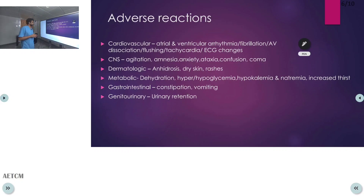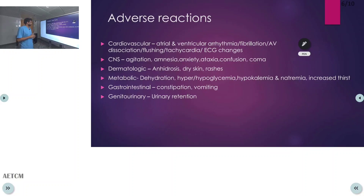In the CNS, agitation, psychosis, confusion, and coma can be seen. In dermatology, as atropine is anticholinergic, there will be dryness of skin, anhidrosis, and rashes causing hypersensitivity reactions. In metabolic components, dehydration, hyperglycemia or hypoglycemia, hypokalemia, hyponatremia, and increased stress can occur.